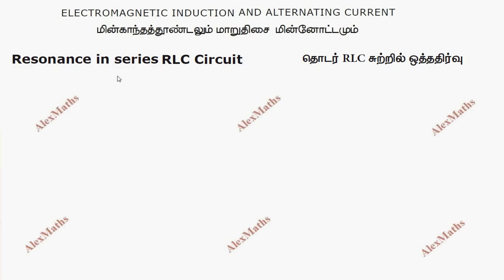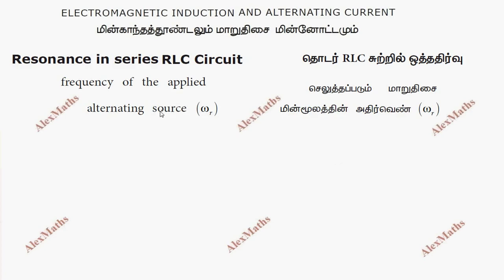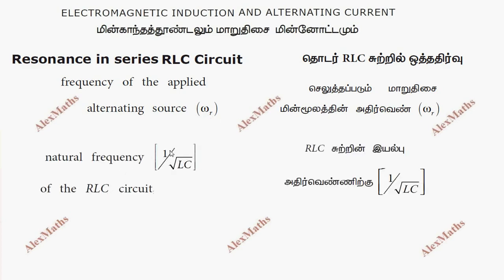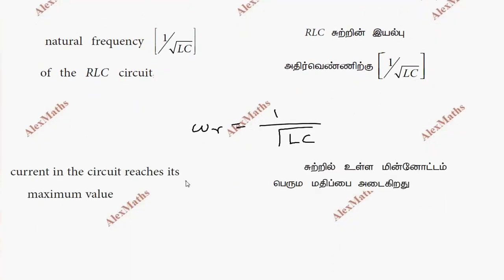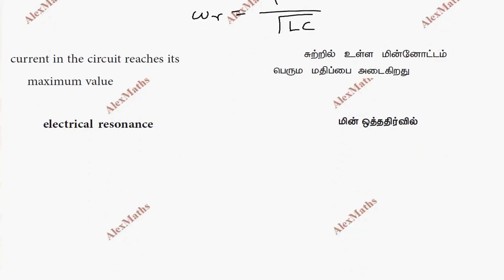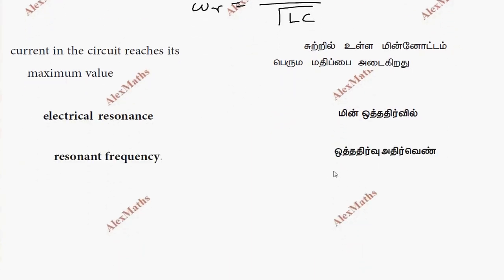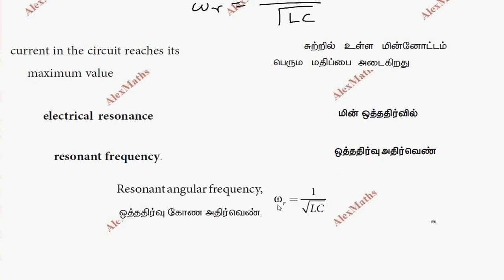Hi students, this is Alex. In this video on resonance in RLC circuits, suppose the frequency of the applied alternating source is omega, and the natural frequency of the RLC circuit is 1 by root LC. If omega equals 1 by root LC, the current reaches its maximum value. This phenomenon is called electrical resonance, and the resonant frequency is omega r.